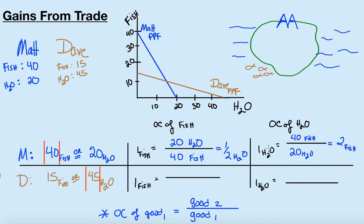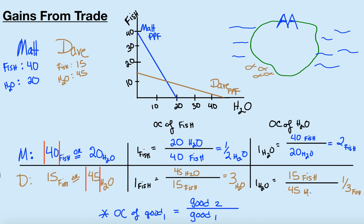Now let's do Dave. Dave's opportunity cost of fish: he can produce 15 fish and would have to give up 45 units of water to produce those 15 fish. So Dave's opportunity cost to make one fish is 45 divided by 15, which equals 3 units of water. For water, it's the reciprocal — one third of a fish. So one unit of water costs Dave 15 units of fish divided by 45 units of water, which equals one third of a fish.